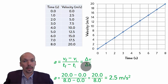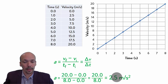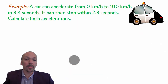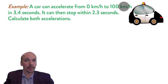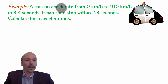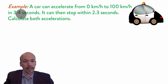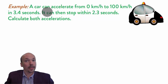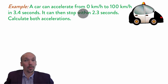Now a few examples of how you can use this equation. It's very important that velocity must be in meters per second, because the result needs to be in meters per second squared. In this question we start with kilometers per hour, so you need to convert that to meters per second. A car can accelerate from 0 km/h to 100 km/h in 3.4 seconds. It can stop within 2.3 seconds. Calculate both accelerations — one for speeding up and one for stopping.